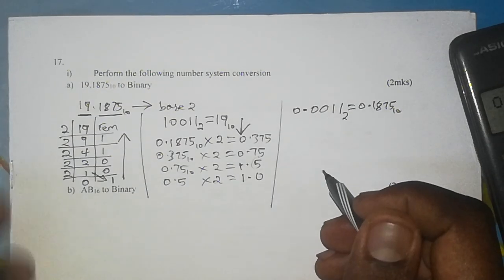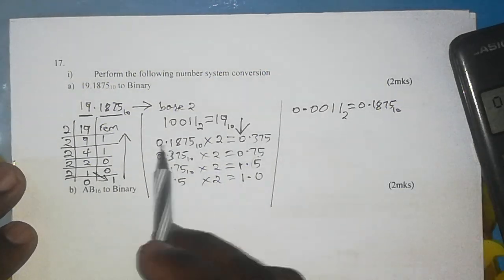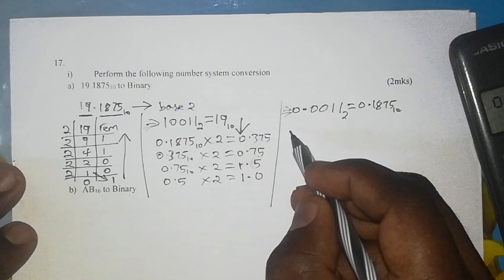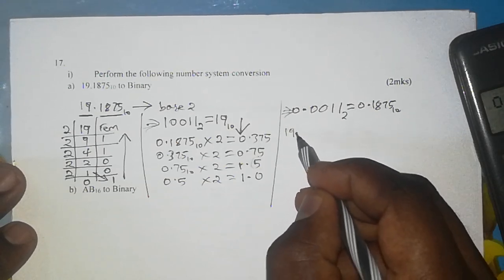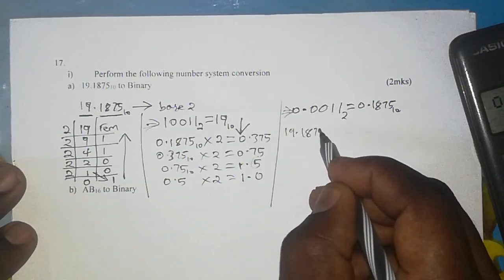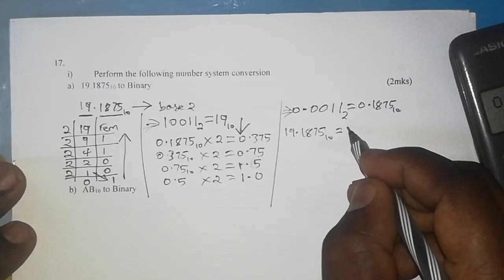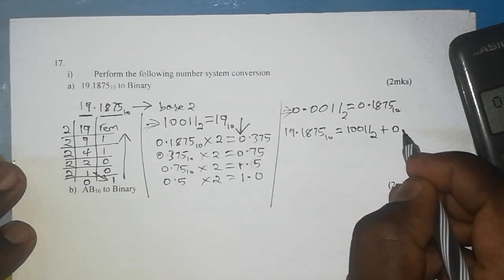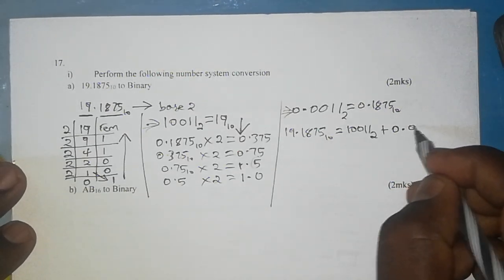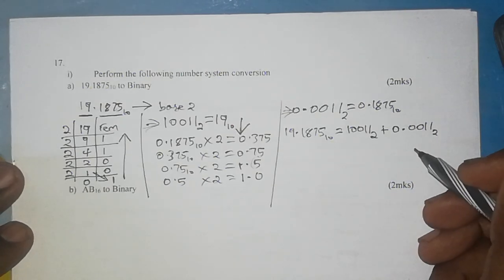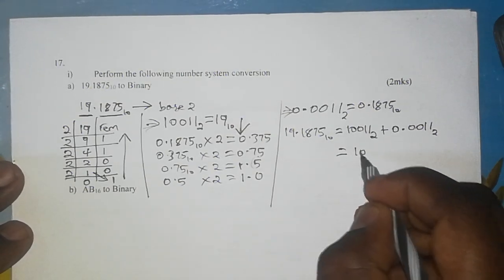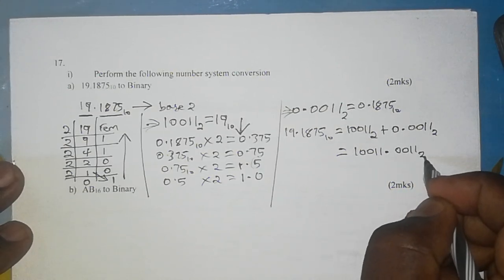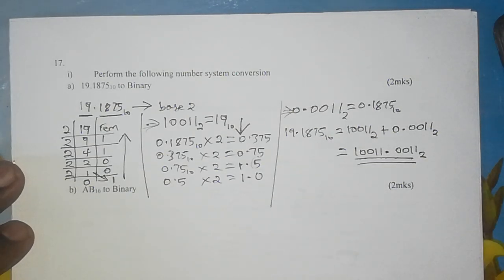So the last portion is to now take our first part, this one, and the second part, this one, and add them. So 19.1875 base 10 is now equal to or equivalent to 1 0 0 1 1 point 0 0 1 1 base 2. And this addition gives us 1 0 0 1 1 point 0 0 1 1 base 2, and that is our answer.